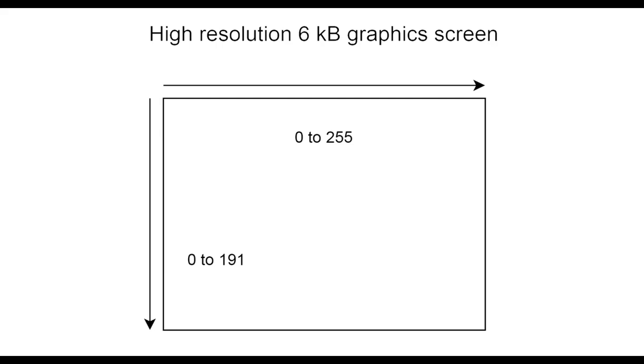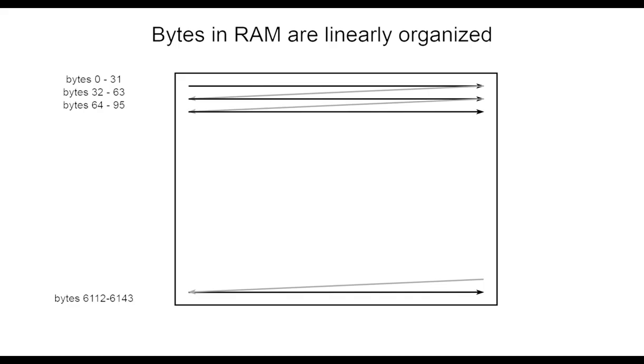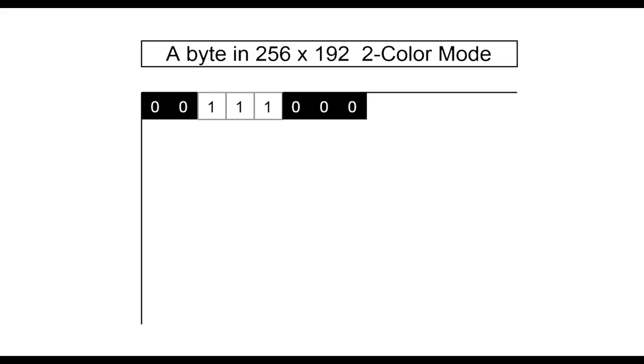The CoCo graphics screen is 256 pixels wide by 192, which works out to 6 kilobytes of RAM. The CoCo screen is drawn in byte order from RAM, which makes it easy to calculate a sprite location. In two-color mode, a pixel is a single bit that is either on or off. In four-color mode, two bits make up the pixel. Zooming into a small section of the 256 by 192 pixels, suppose we have a black background for our space scene — this area is 3 bytes wide, or 24 pixels, by 16 pixels tall.